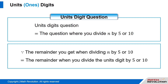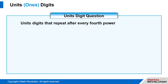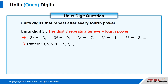We will look at the digits that repeat after every fourth power. Units digit 3: the digit 3 repeats after every fourth power. That is, 3 to the power of 1 equals 3, 3 to the power of 2 equals 9, 3 to the power of 3 equals 7, 3 to the power of 4 equals 1, and 3 to the power of 5 equals 3, and so on. Thus, the pattern is 3, 9, 7, 1, 3, 9, 7, 1, and so on.